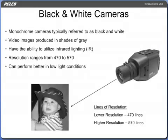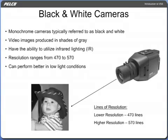Monochrome cameras are typically referred to as black and white because the video image they produce is in shades of grey. Only black and white CCD cameras or new day-night cameras have the ability to utilize infrared lighting. Black and white camera lines of resolution range from 470 for lower resolution cameras to 570 for higher resolution cameras. Even without infrared lighting, a black and white camera will perform better in low light conditions than a color camera equipped with a comparable CCD imager, lens, and quality of manufacture.